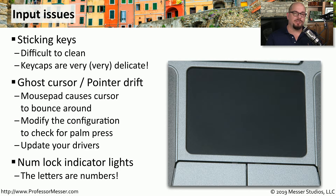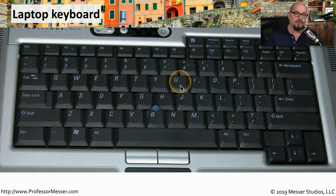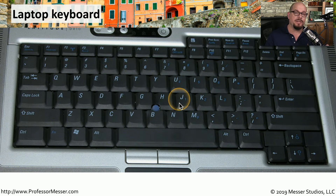One challenge with laptops is the limited keyboard space, so there's usually no independent number pad on the side. The laptop may have a grouping of keys that double as both letters and numbers. If you inadvertently turn on NumLock, you may find that instead of typing letters, you're suddenly typing numbers. If you look closely at the keyboard, there's a NumLock key at the upper right, and you'll notice keys that have a letter and a smaller number shown in blue — with NumLock on, pressing those keys produces a number instead of the letter.